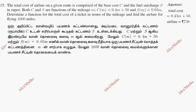Hi students, this is Alex here. Question number 15. The total cost of airfare on a given route is comprised of the base cost C and the fuel surcharge S.